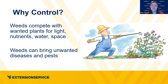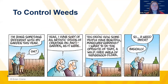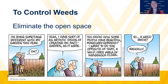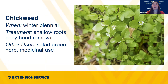We also have biennials in plants — they usually take two growing seasons. We want to control weeds because they compete with our wanted plants for light, nutrients, water, and space, and they can also bring unwanted diseases and pests. Ultimately it comes down to: eliminate the open space, though that's a lot easier said than done. What you have to decide is how you're going to eliminate that open space — whether through cover crops, mulch, or other methods. I identify with that very personally because we have a lot of weeds in our yard, but diversity is all good.